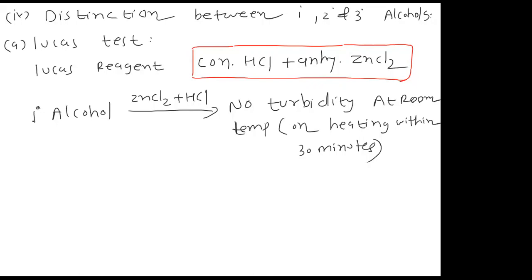Secondary alcohol: ZnCl2 plus HCl. Here the solution will become turbid. Turbidity appears within some time, within 5 minutes.